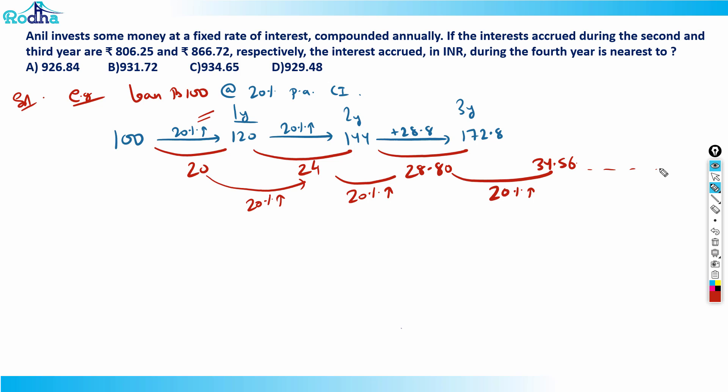Coming back to this question, I can say that in one year the interest is 806. The interest accrued in one year, maybe that is the second year, is 806. Now let's say 806 only, and let's round off. And let's say this is 8.67.